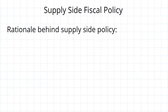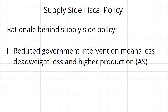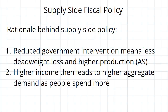The rationale behind it is as follows: if you reduce government intervention in the economy, then there will be less deadweight loss and higher production. Higher production means we've got a higher aggregate supply.